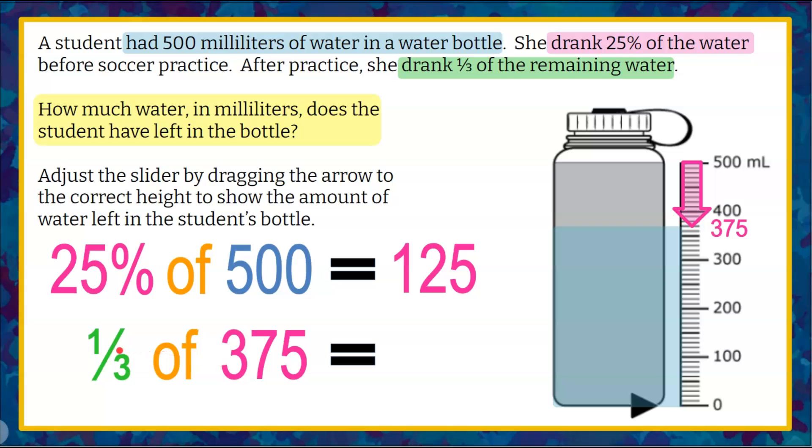We're going to do more mental math. We want to find one third of this. We want to divide this into three equal groups. So let's look at the 300. That would be three equal groups of 100. And then we have the 75. Well, 75 in three equal groups would be 25 each. So 125 again. So 25%, or one fourth of 500, is 125. And one third of 375 is also 125.